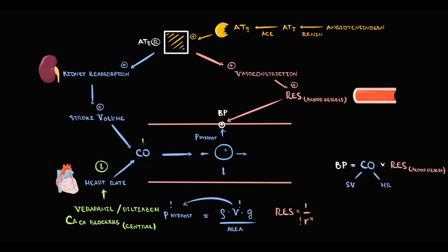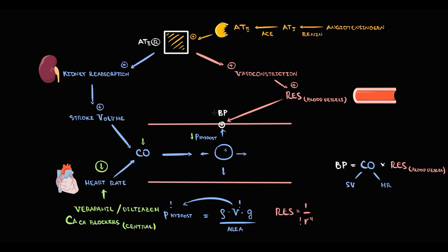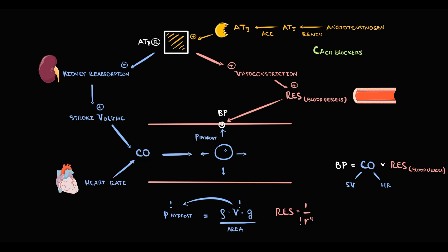With decrease in heart rate, cardiac output decreases. With decrease in cardiac output, the volume of blood entering the vessel decreases, and the lower the volume inside the vessel, the lower the hydrostatic pressure, and thereby the lower the blood pressure. The major effect of peripheral calcium channel blockers — the dihydropyridines — is relaxation of peripheral blood vessels. With relaxation, the radius of blood vessels increases and resistance decreases, resulting in decreased blood pressure.